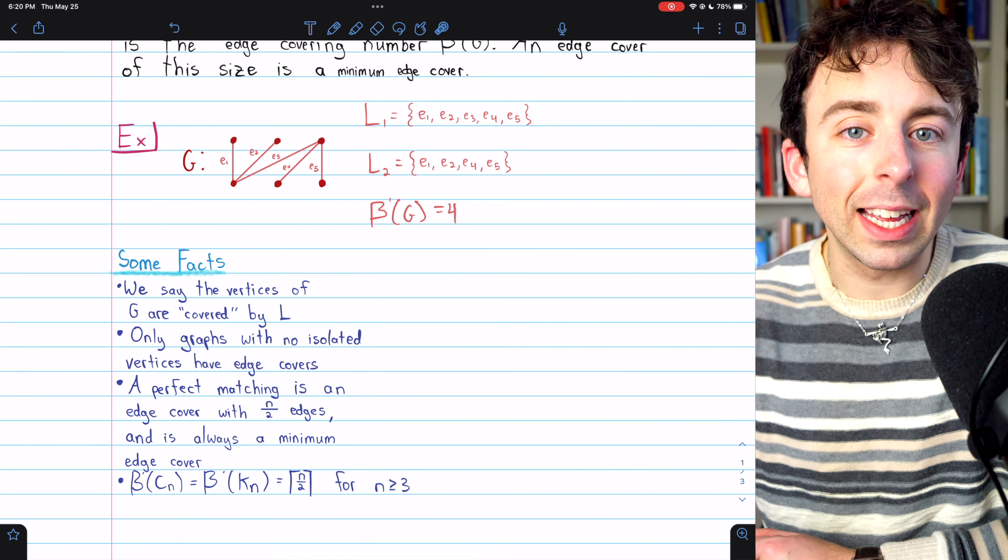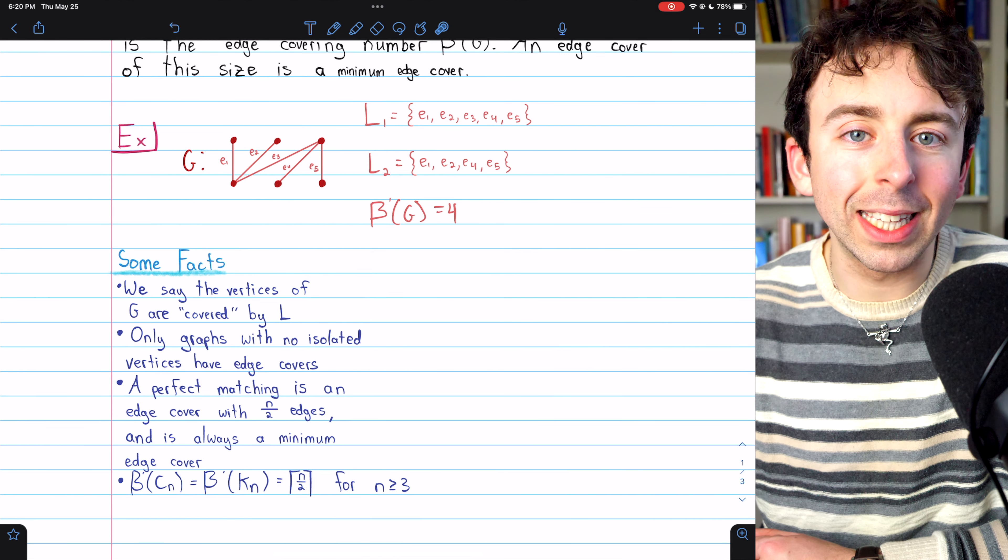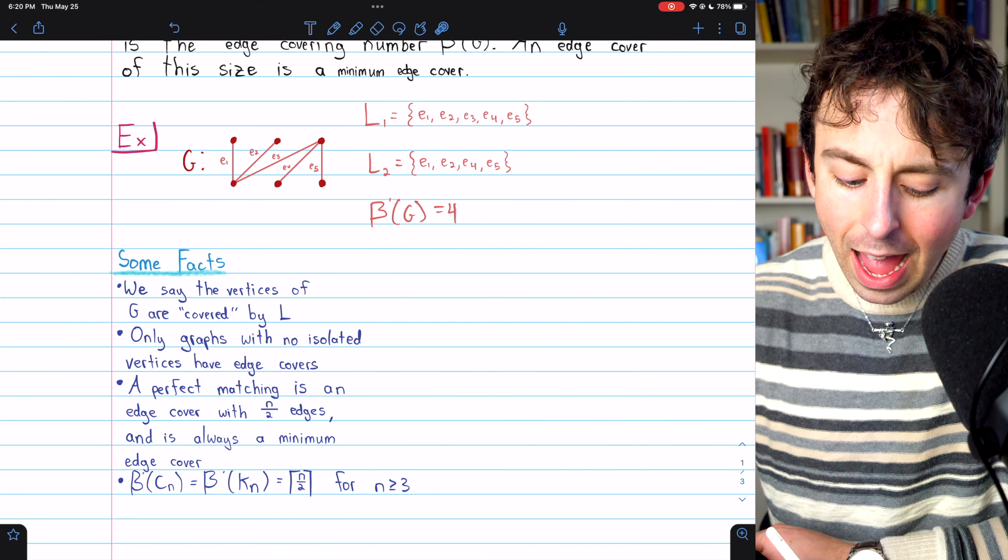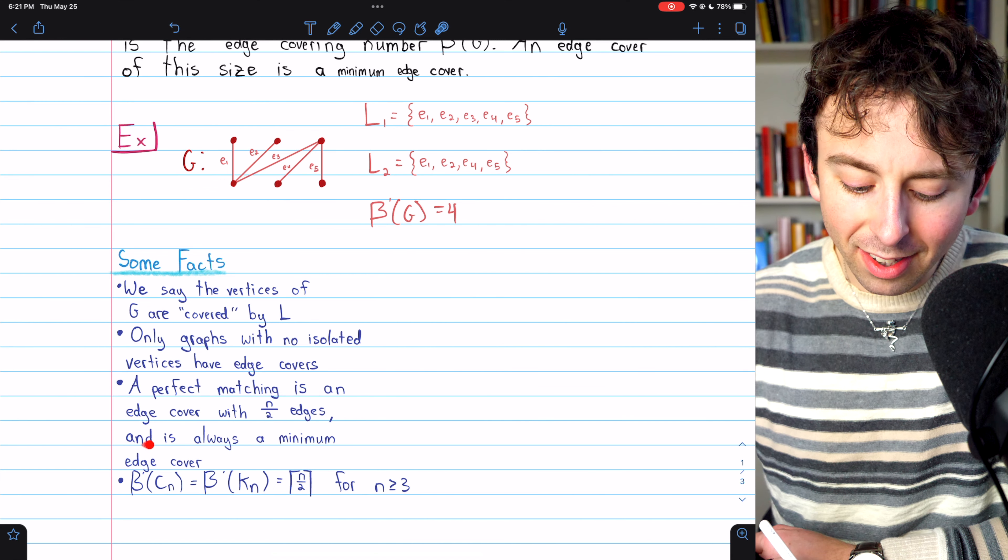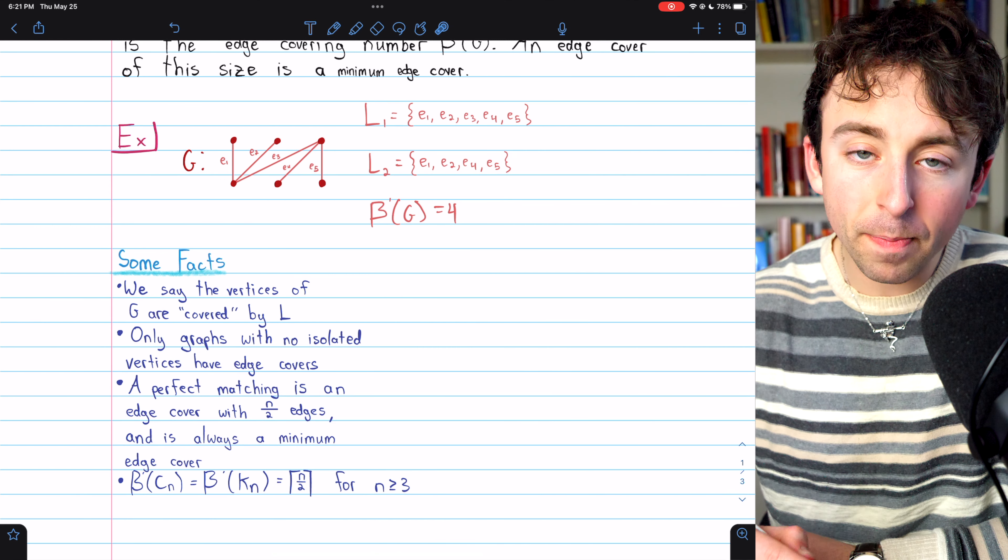Now you may recall what a matching in a graph is. Link in the description to my lesson introducing that topic. A perfect matching is an edge cover with N over two edges, and this is always a minimum edge cover.